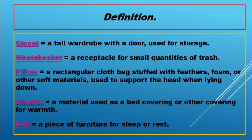Next, wastebasket. A receptacle for small quantities of trash. So a receptacle means a receiver. A small number of trash — when we say quantities, it's a number; when we say trash, that is garbage, materials that you're not using anymore. So that is a trash.